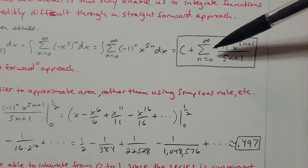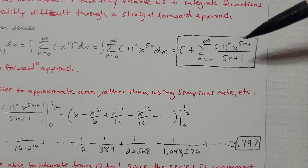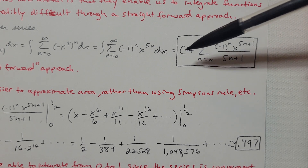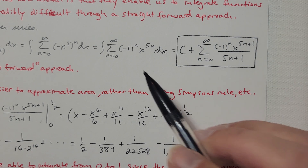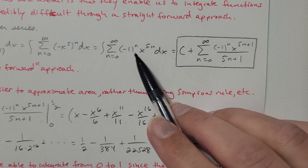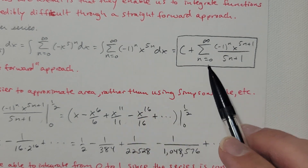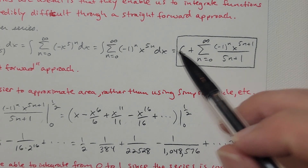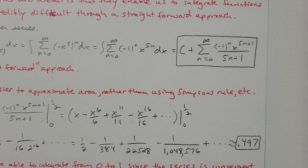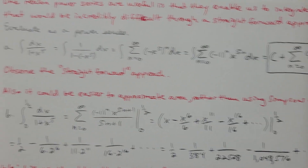For an indefinite integral we must have a +C, which I write before the sum to avoid implying we're adding a constant infinitely many times inside the sum. Integrating each term just means adding 1 to the power of x and dividing by the new power. The result is: C + summation as n=0 to infinity of (-1)ⁿ · x^(5n+1) / (5n+1). That's the answer — about one line of work.